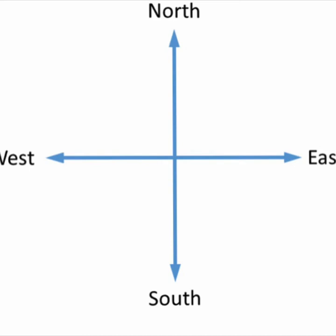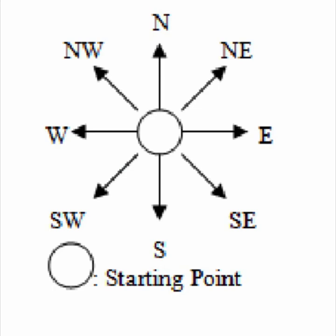North direction is at the top, East direction is on your right-hand side, South direction is at the bottom, and West direction is on your left-hand side. From the top you see N which shows North direction, then coming to your right E which shows East direction. In the middle of North and East, the area which lies is called North-East direction, denoted as NE.